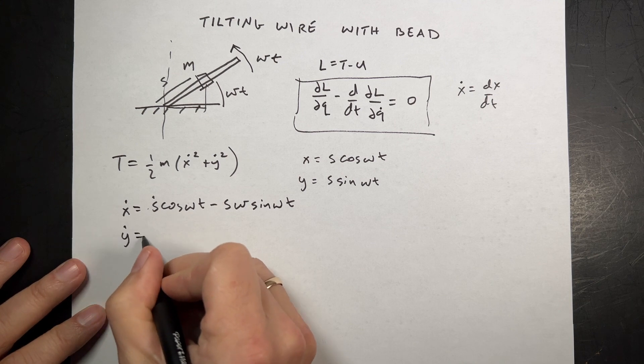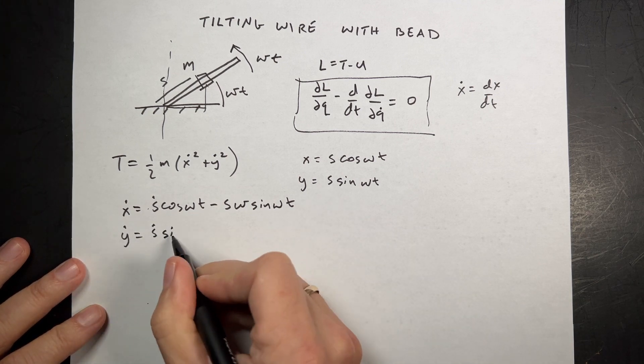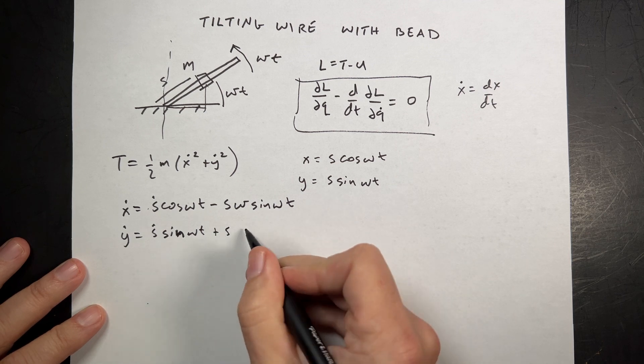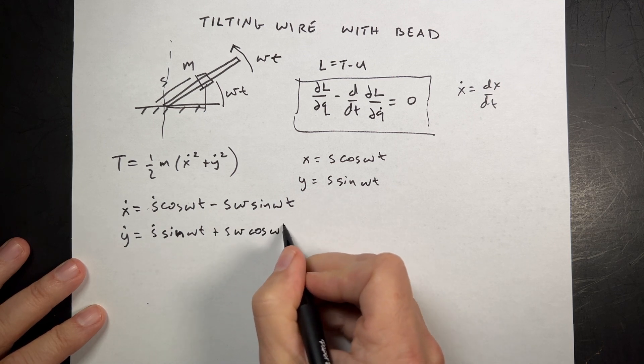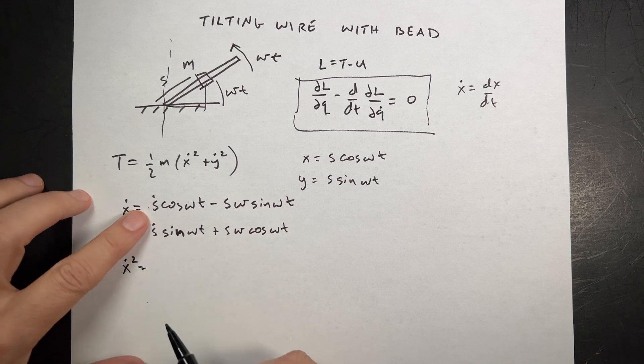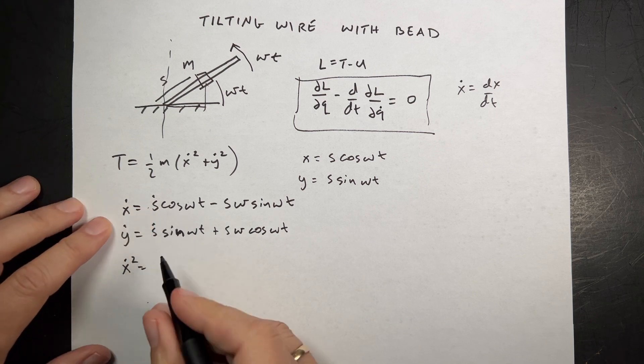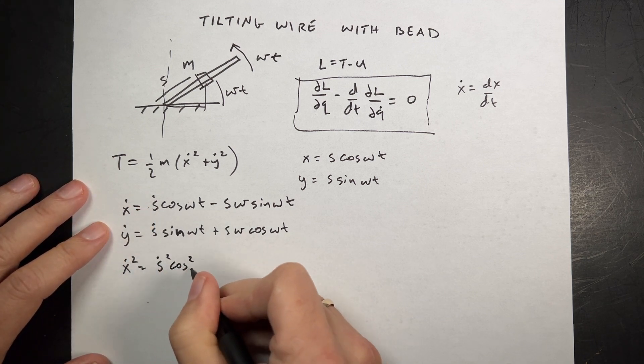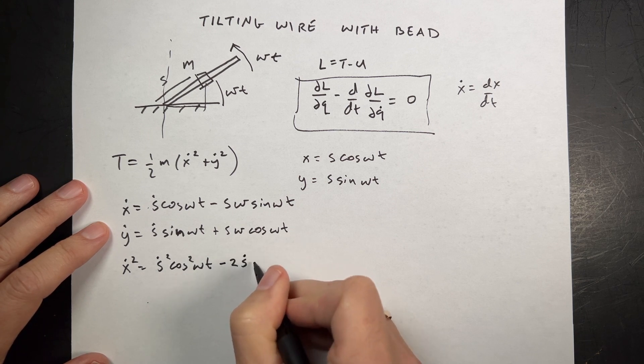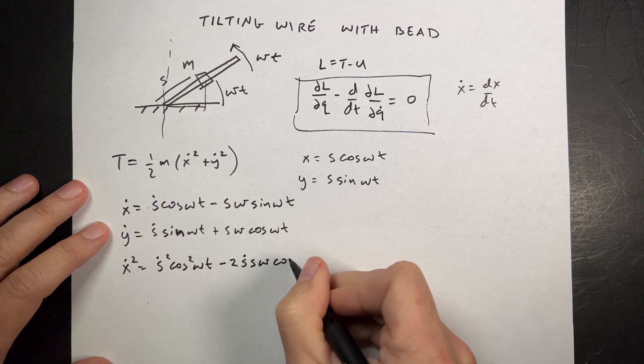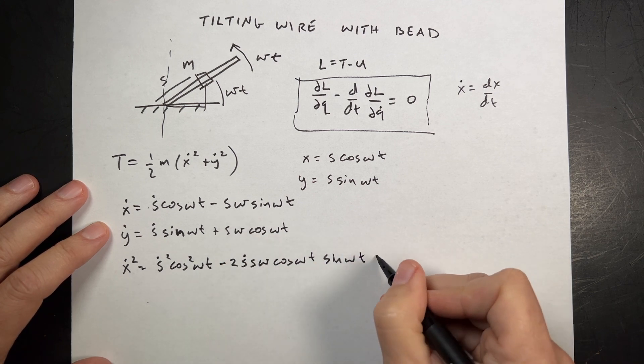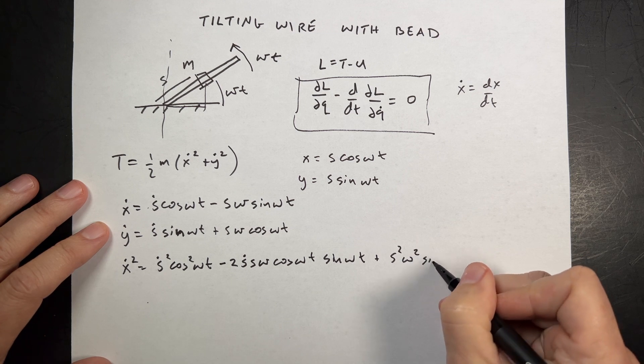Now I can take the derivatives of these and square them. That's not too hard. So let's do that. I have x dot. If I take the derivative of this with respect to time, I actually have two terms that depend on time. S changes with time and time changes with time. So I'm going to use the product rule. So the derivative of this is going to be equal to S dot times cosine omega t. Now I have to take the derivative of this. So the derivative of cosine omega t is negative sine omega t. And then I have to take the derivative of omega t. So I'm going to get negative S omega sine omega t.